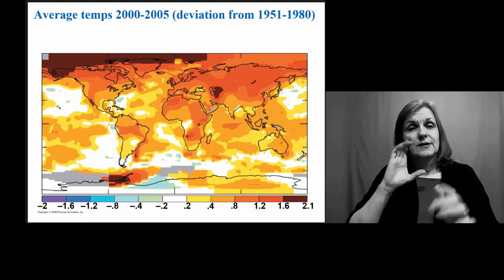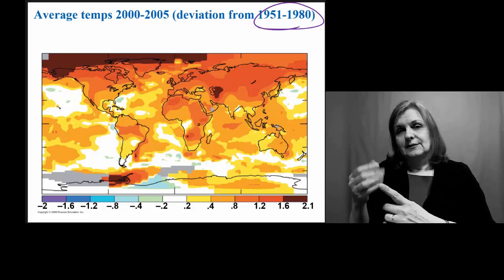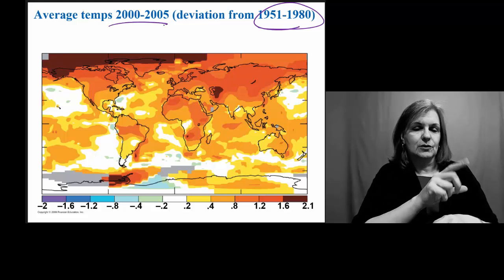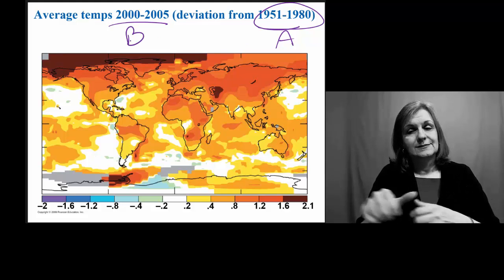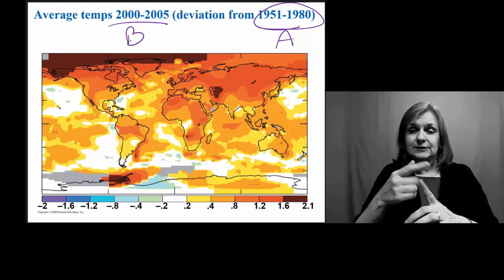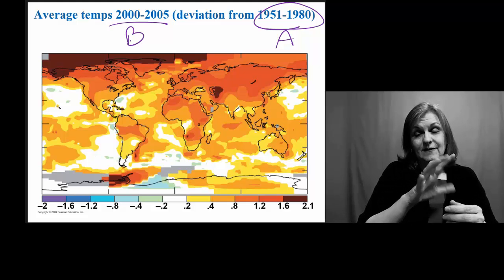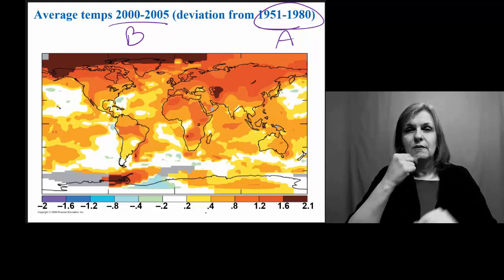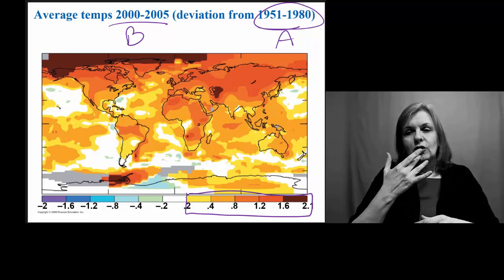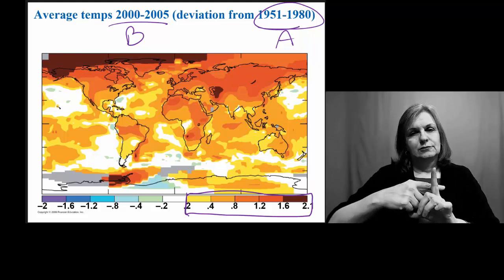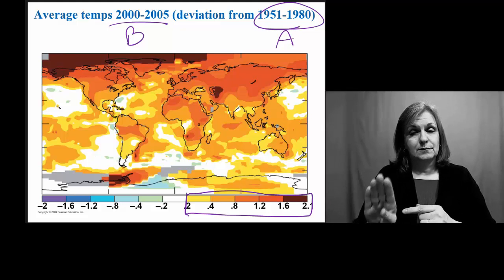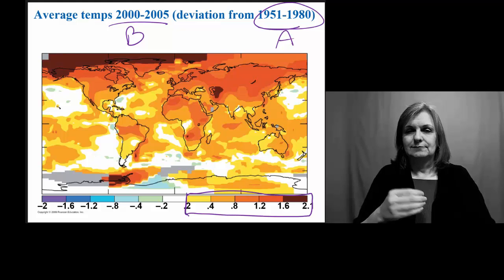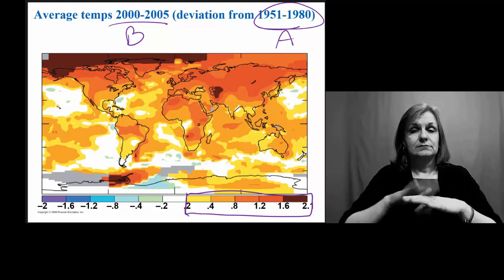So, changes in average temperatures. This is taking the average temperature between 1951 and 1980 as our baseline. Now we're going to compare that to the average temperature between 2000 and 2005. We want to know: is the average temperature for point B, 2000 to 2005, greater or less than from point A, 1951 to 1980? All of the red, orange, and dark red indicates a positive increase in temperature, meaning that B is warmer than A — warmer recently than historically. The white indicates essentially no temperature change, seen primarily over the oceans.